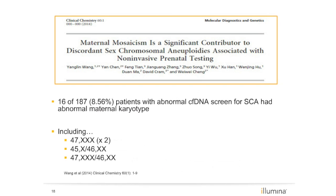Wang et al. in 2014 reported that in a study of 187 abnormal NIPT reports for sex chromosome abnormalities, approximately 9% were reflective of the maternal karyotype and not the actual fetus. Reported karyotype results included monosomy X, triple X, and mosaic forms of each. When reporting out sex chromosome abnormalities, particularly those involving the X chromosome, consideration of maternal karyotype analysis is also recommended.